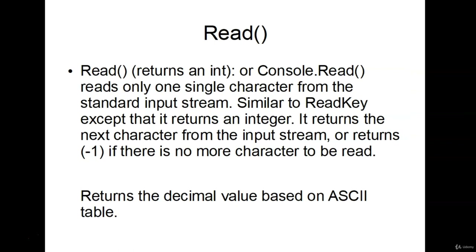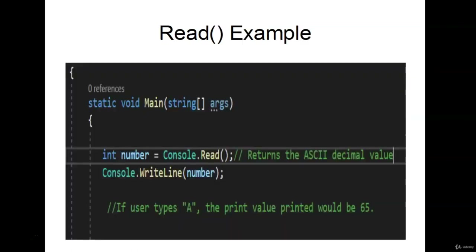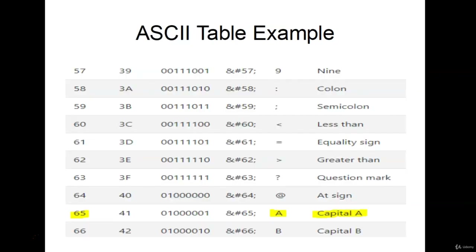The last method is Read. What's important is that it returns an integer. If nothing is entered, it returns negative 1. But if anything is entered, it returns the decimal equivalent based on the ASCII table. For example, if we have int number equals console.Read, and the user inputs capital A, it returns the decimal value from the ASCII table assigned to number. When we print number, we get 65 — and looking at the ASCII table, capital A equals 65.